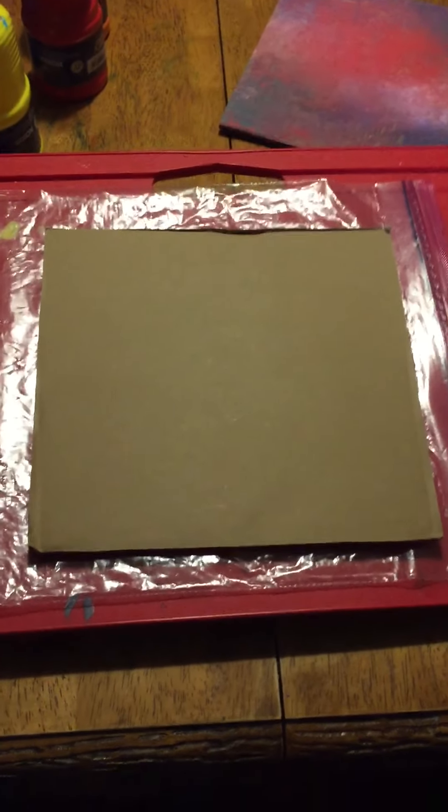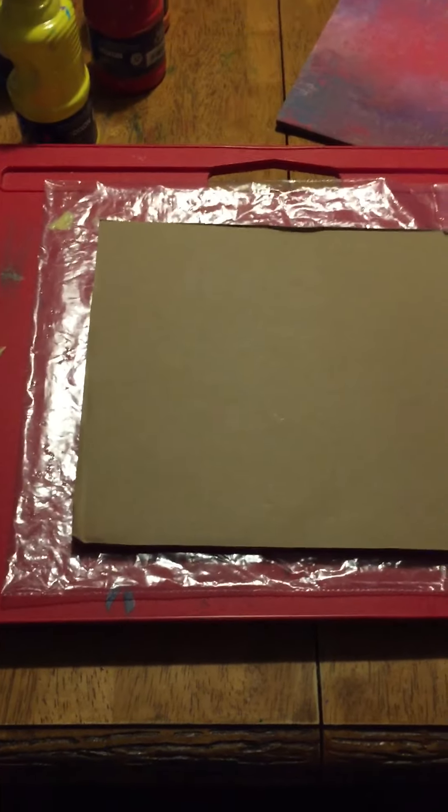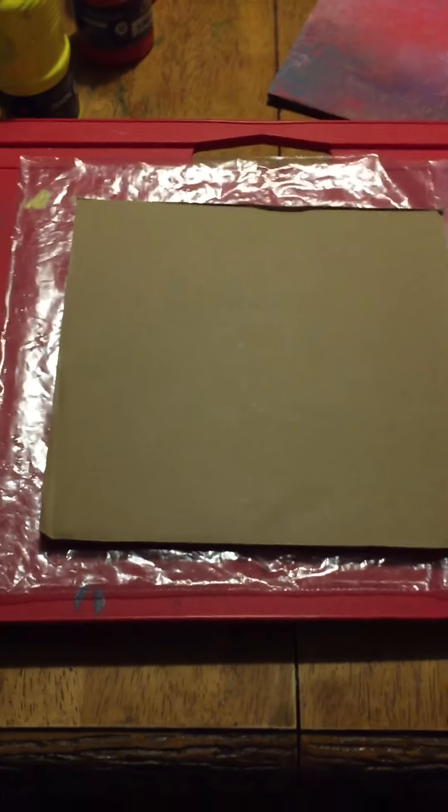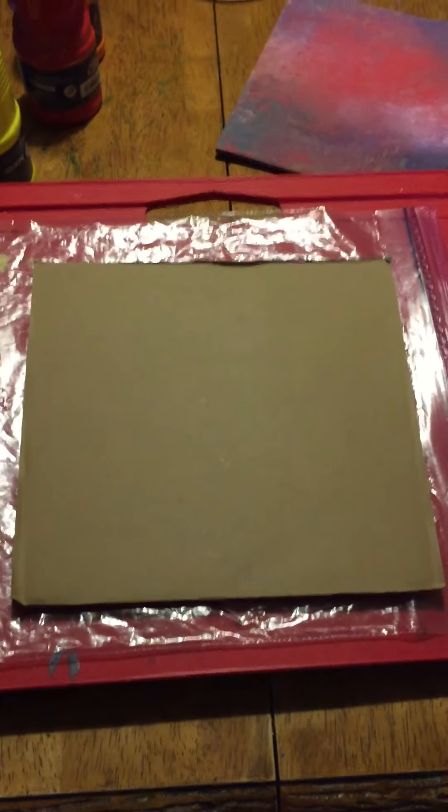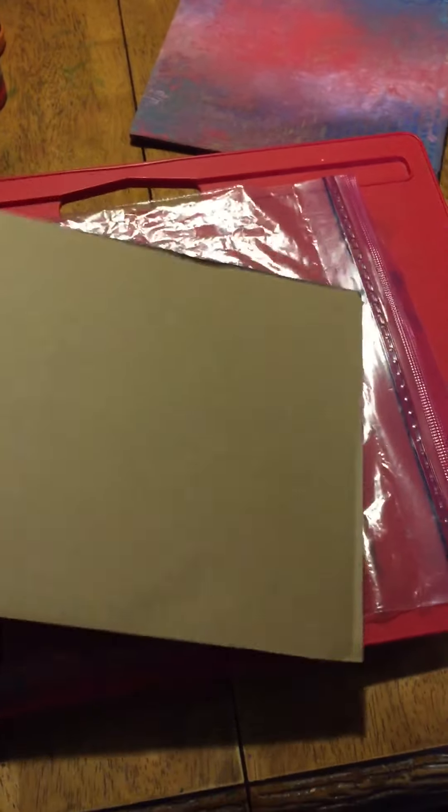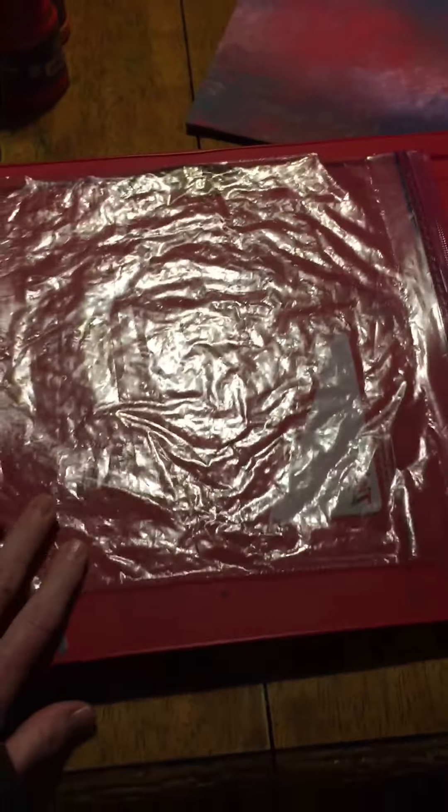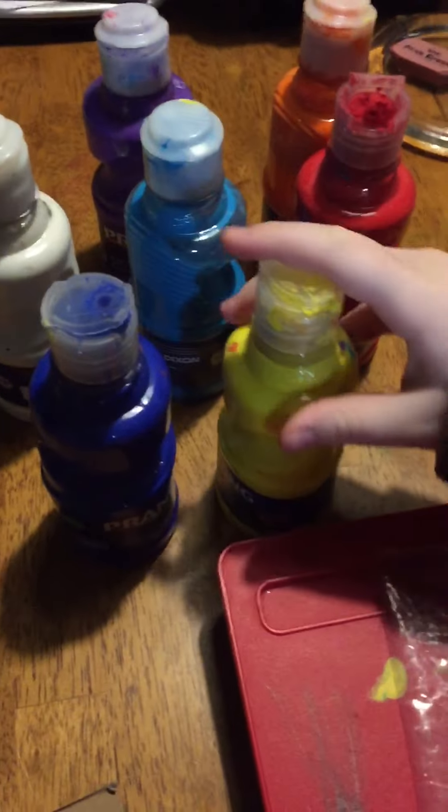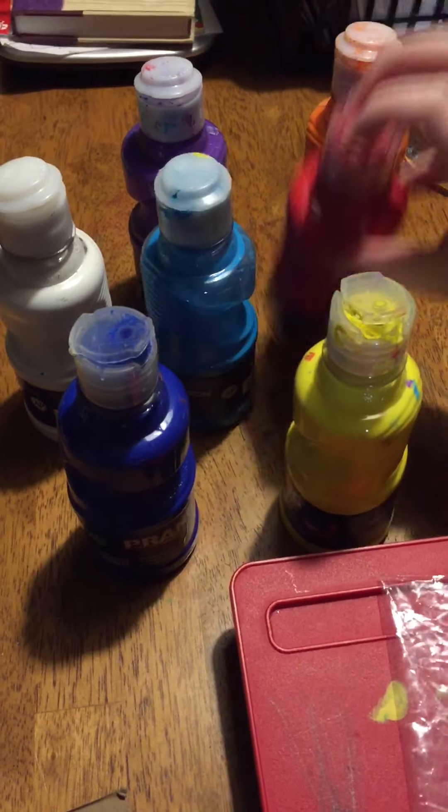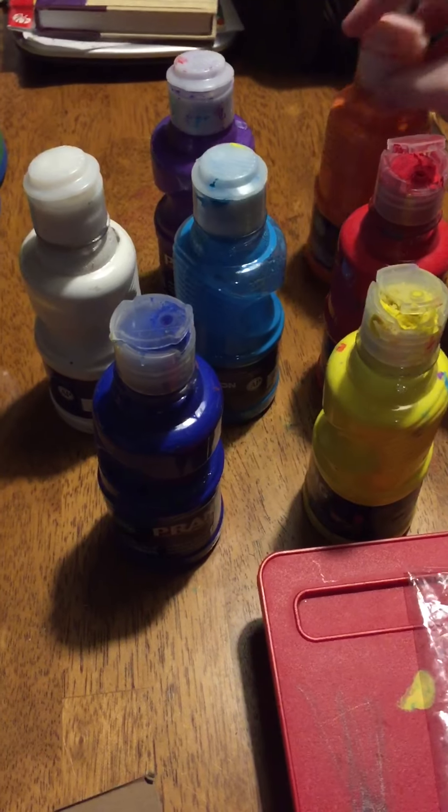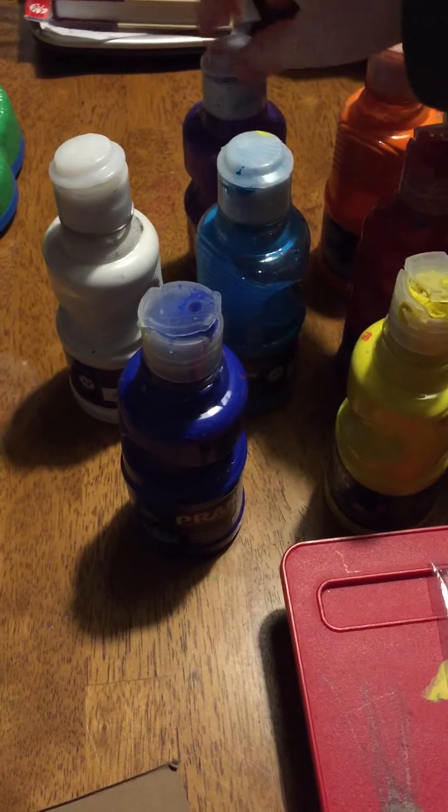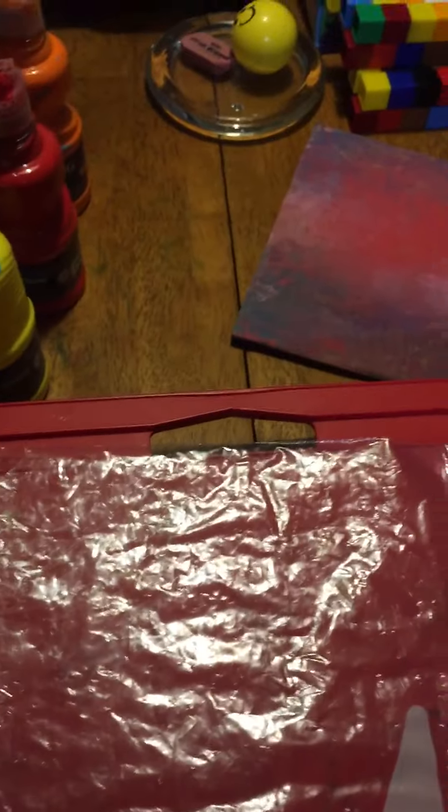We're going to show you how you can paint in a bag. You only need a few items: you can use a piece of paper, but we're using a small piece of cardboard. You need a baggie and some paint: yellow, red, orange, purple, white, blue, and light blue.